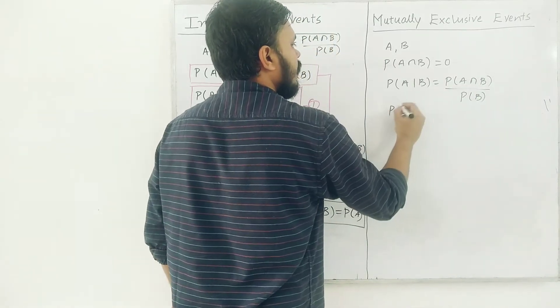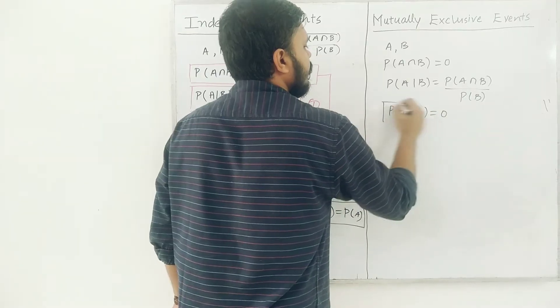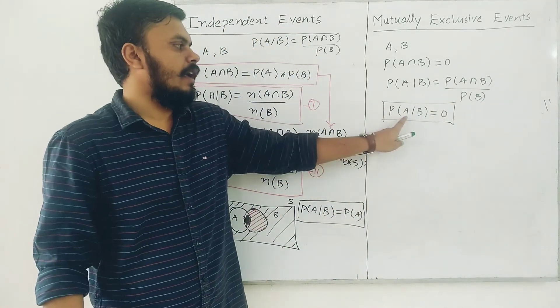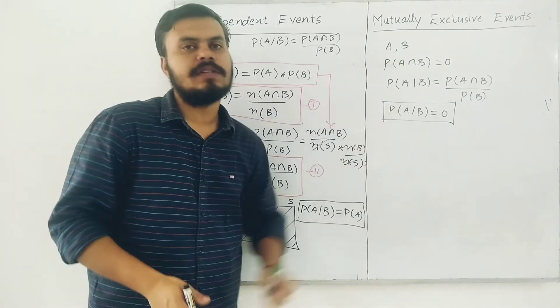Since this one is 0, this also becomes 0. So this is the rule. Probability of A given B, knowing that both are mutually exclusive events, is going to be 0.